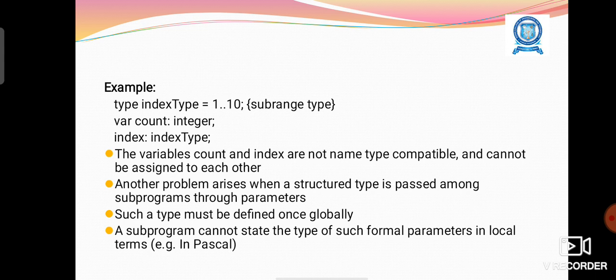Example: type index type equal to 1 to 10 sub range types. Var count integer, index index type. The variables count and index are not same type compatible and cannot be assigned to each other.